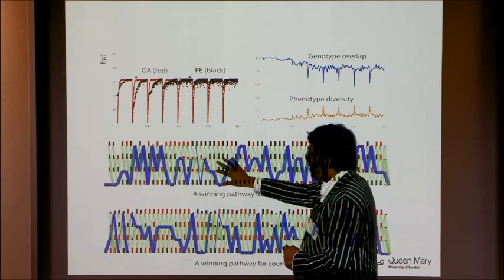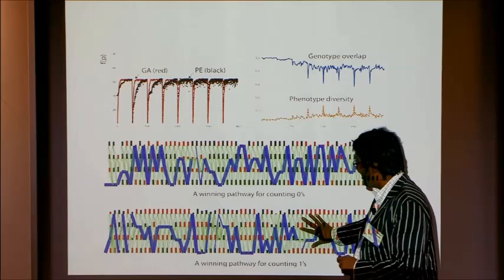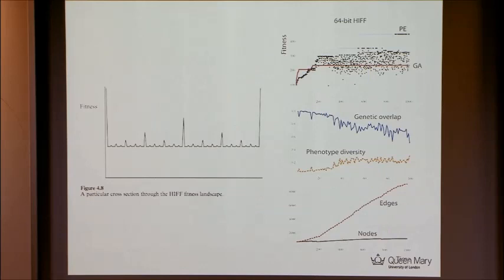We've also tried the HIF problem — Richards' Hierarchical If-and-only-if problem — and it's able to do quite well. This is one implementation of natural selection in a rather weird way where genotypes overlap. Organisms don't typically overlap with each other, but here our units of evolution can.